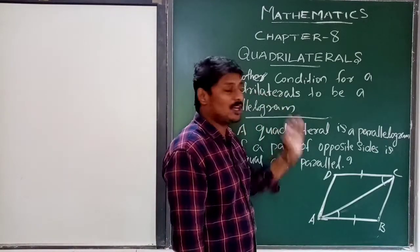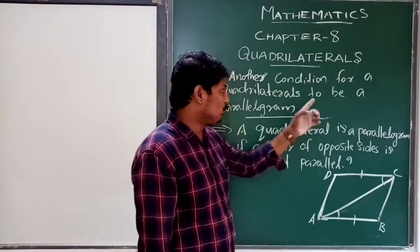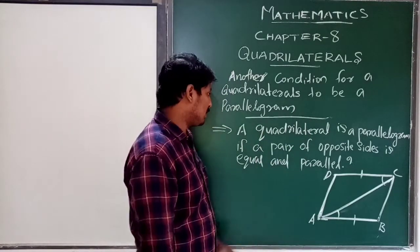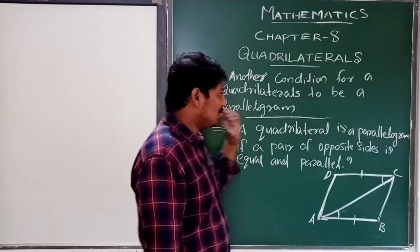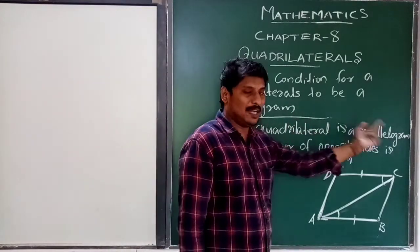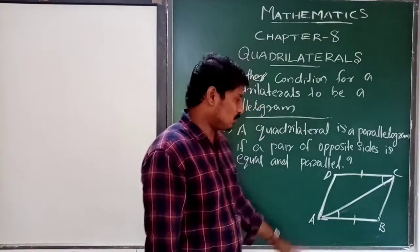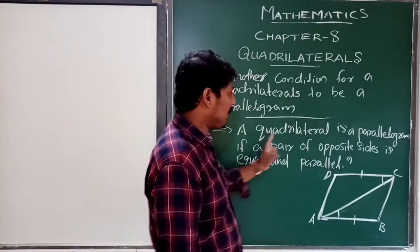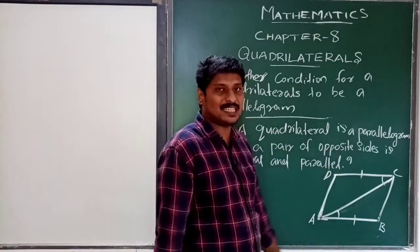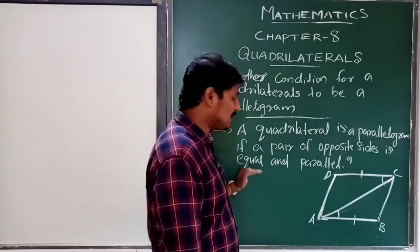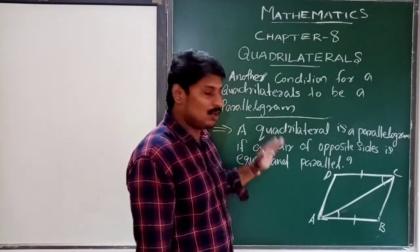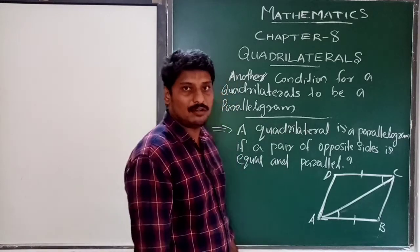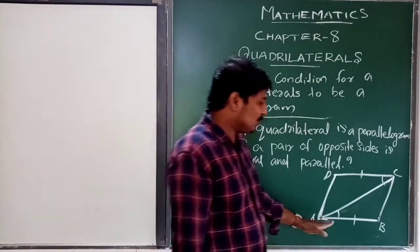Another condition for a quadrilateral to be a parallelogram: a quadrilateral is a parallelogram if a pair of opposite sides is equal and parallel.